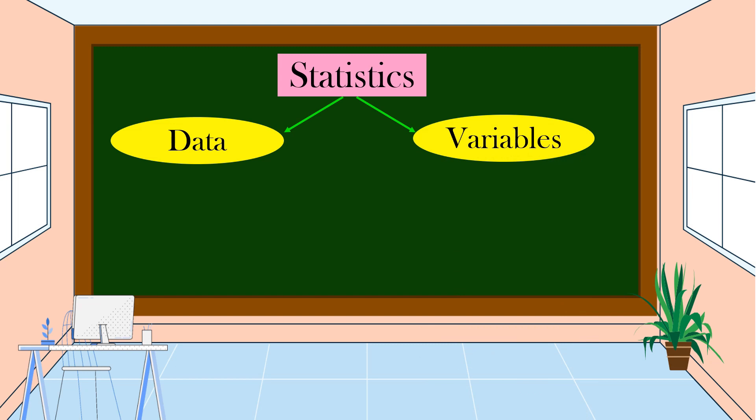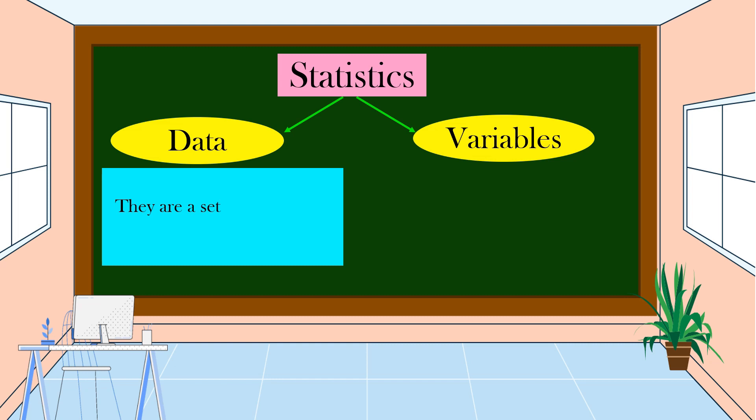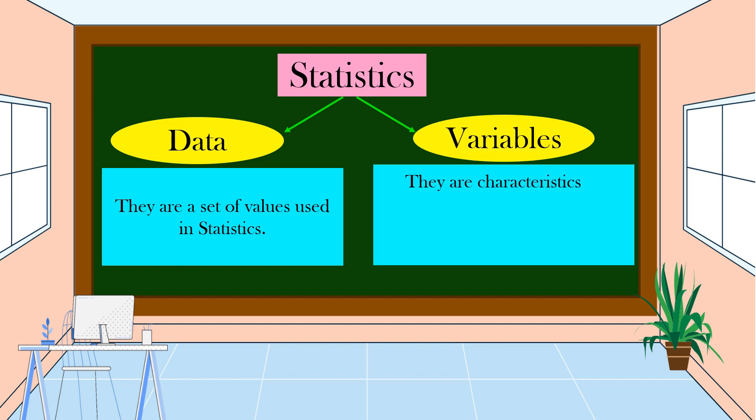What do you mean by data? When we say data, they are a set of values used in statistics. How about variables? Variables are characteristics or properties of people, objects, places, or things in statistics that are being represented by data.